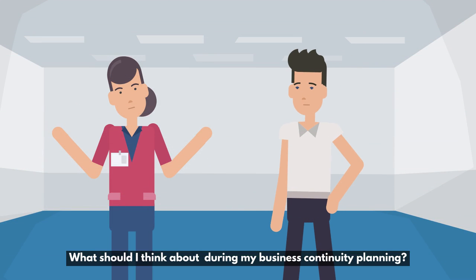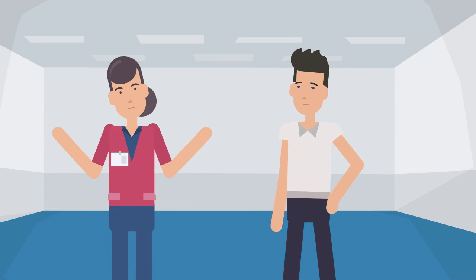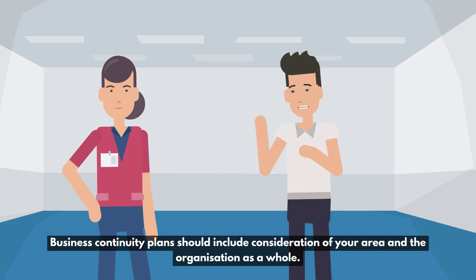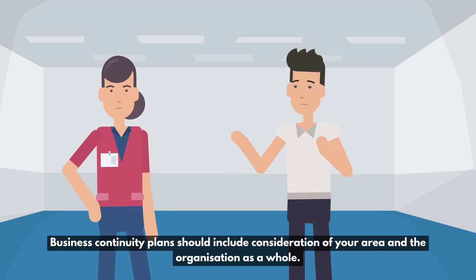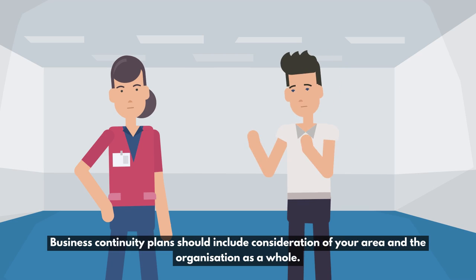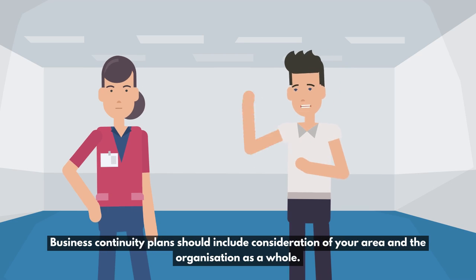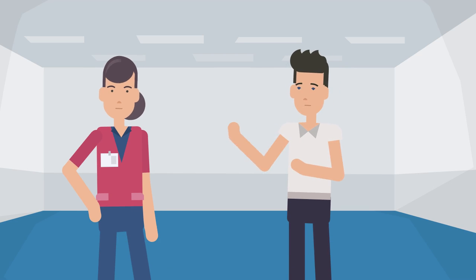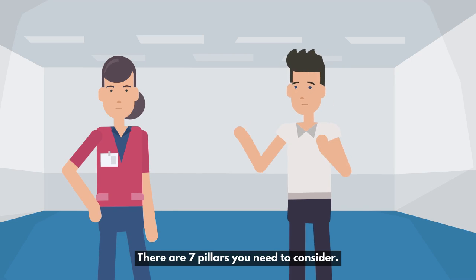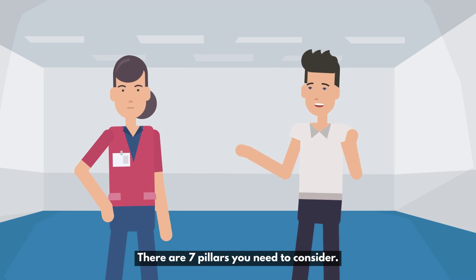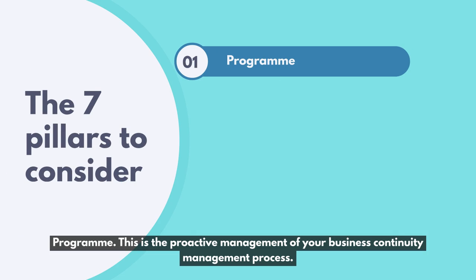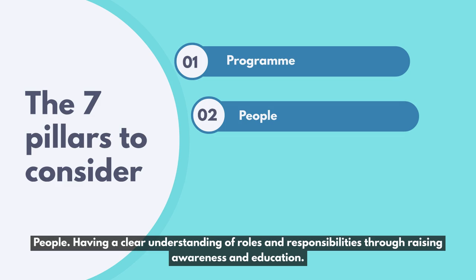What should I think about during my business continuity planning? Business continuity plans should include consideration of your area and the organization as a whole. There are seven pillars you need to consider. Program: this is the proactive management of your business continuity management process. People: having a clear understanding of roles and responsibilities through raising awareness and education.